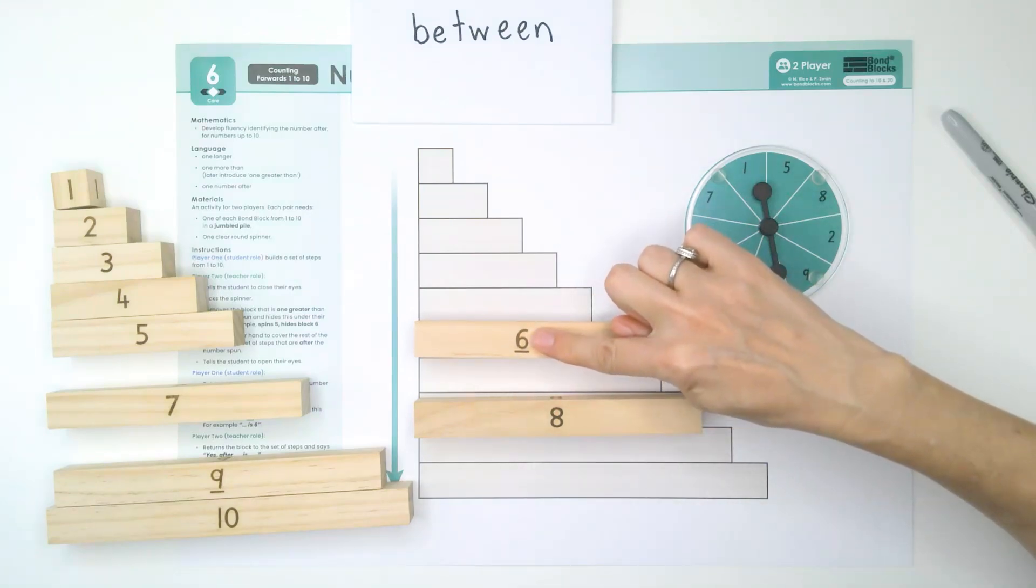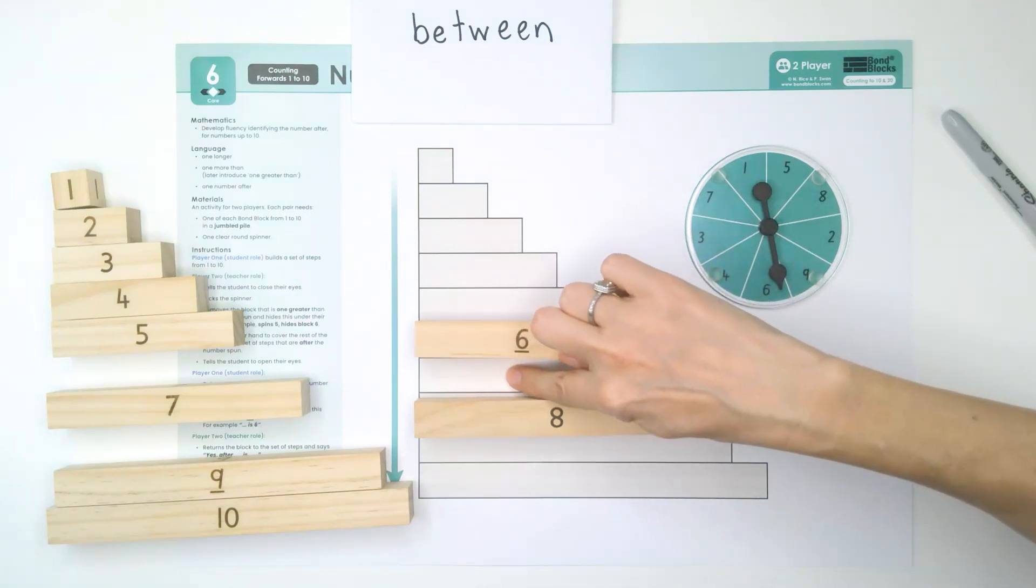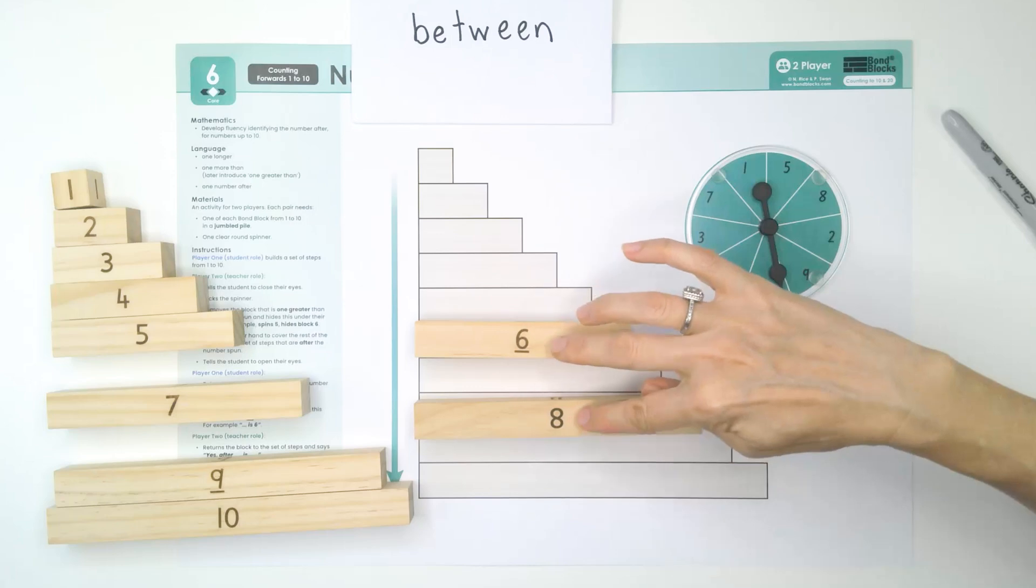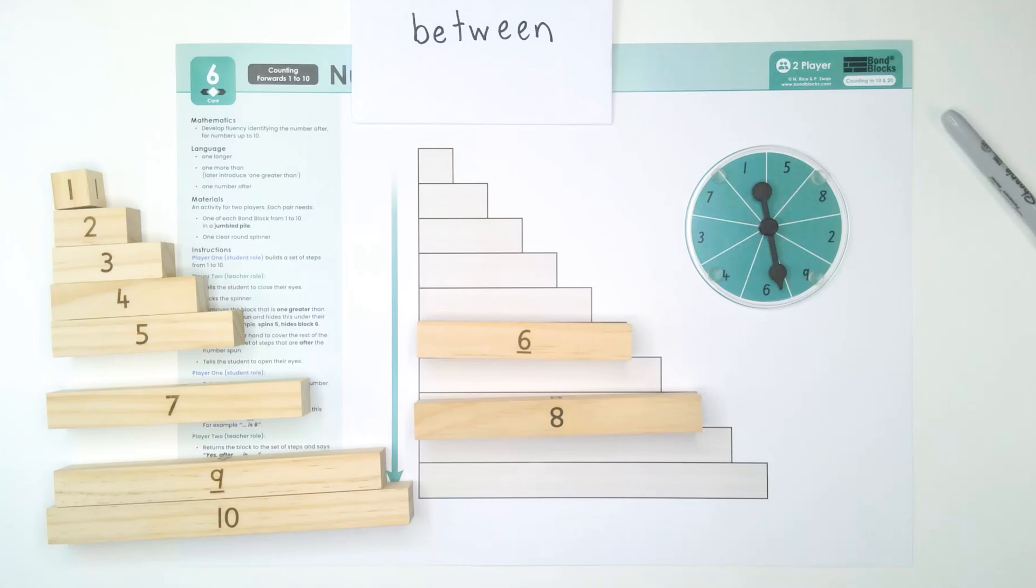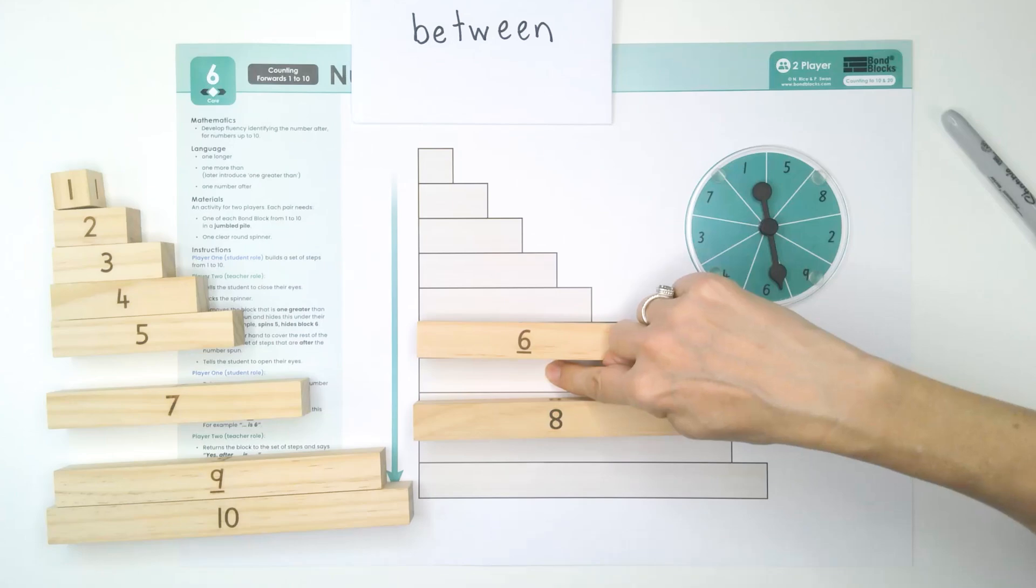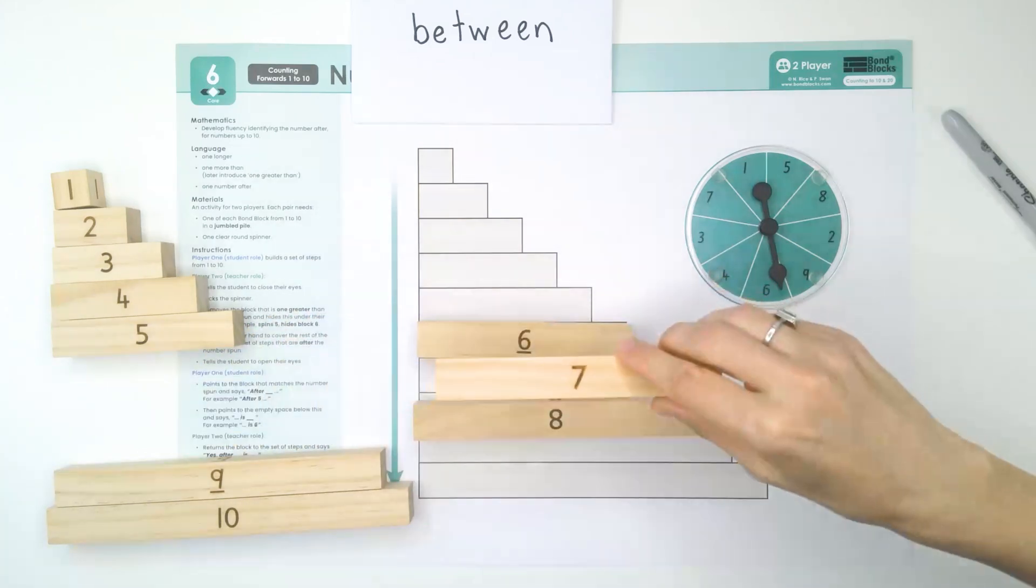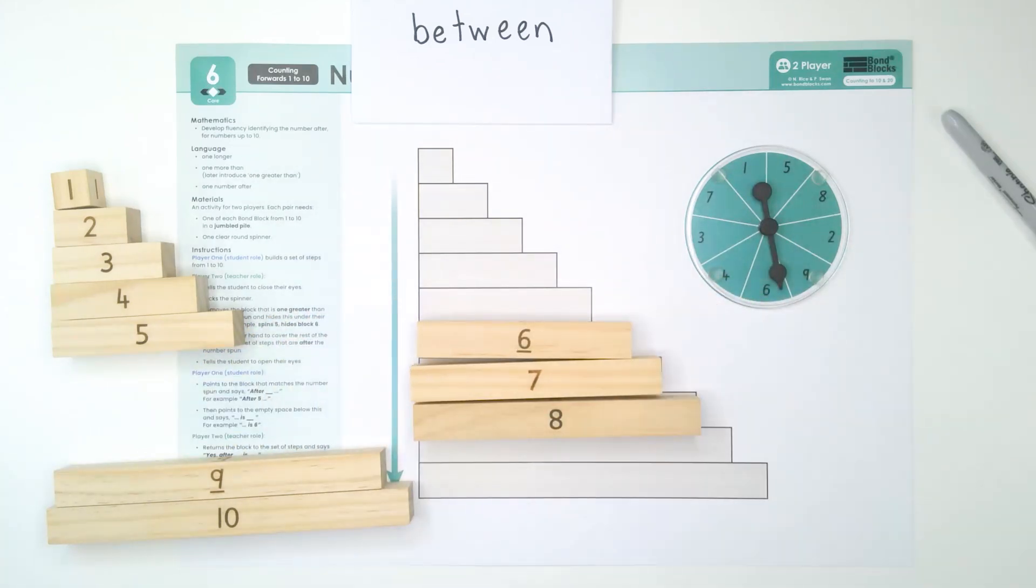So, that's the number spun. The one in the middle of these two is between. So then, Karis, you would say between six and eight is seven. And I would put the block back and say, yes, between six and eight is seven.